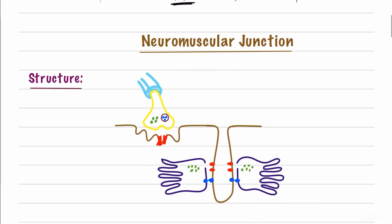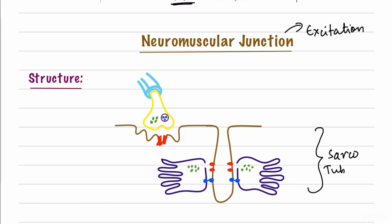Now we move into the neuromuscular junction, where excitation occurs. There is an additional system involved in the muscular region called the sarco-tubular system. As the name suggests, the sarco-tubular system consists of two parts — the first is the sarcolemma.